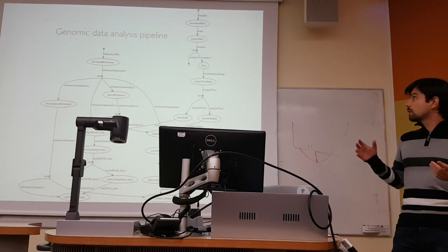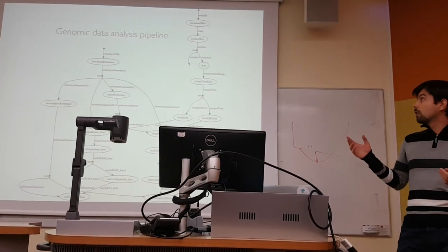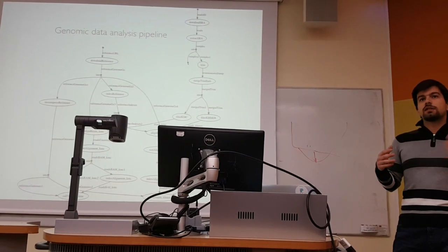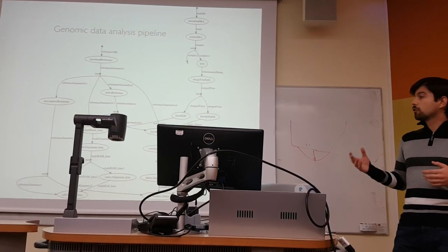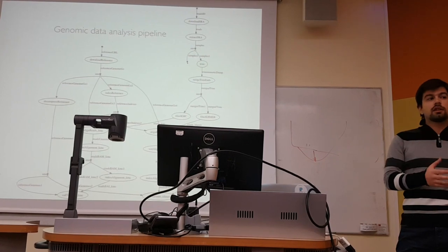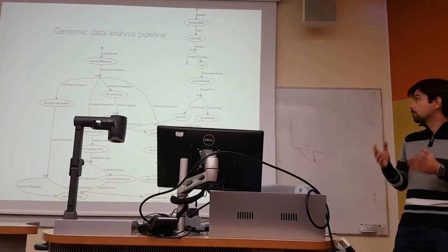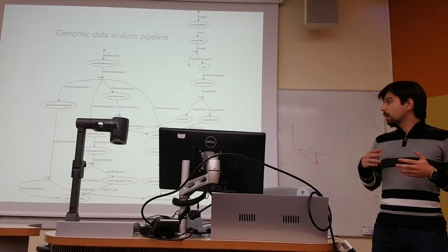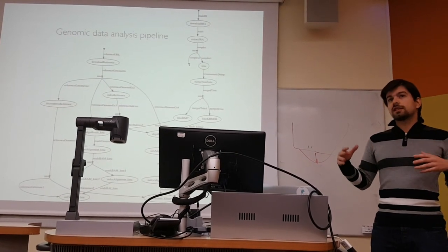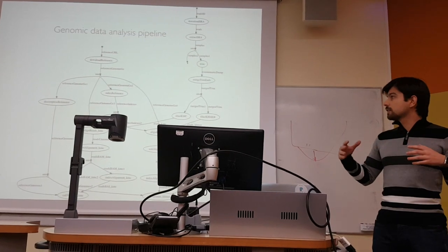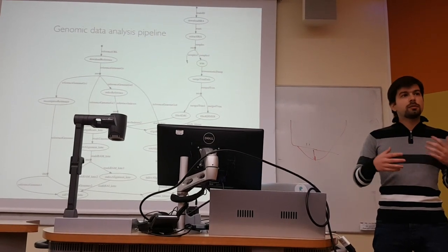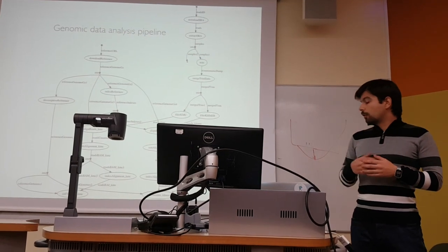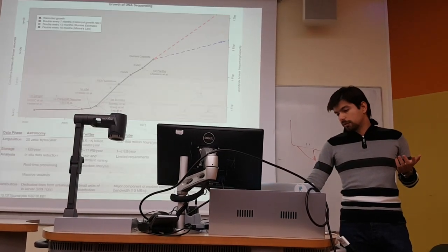Each circle is a task, and each arrow is a dependency — the output of one task is the input of another, and you have to wait for a task to finish before moving to the next. These pipelines, when you're trying to do several things at the same time, can become really messy and start generating a lot of intermediate files. I was trying to find a better way to solve this problem.